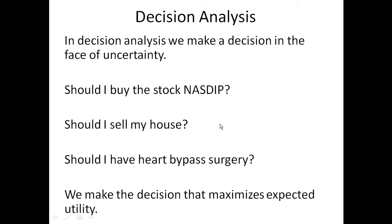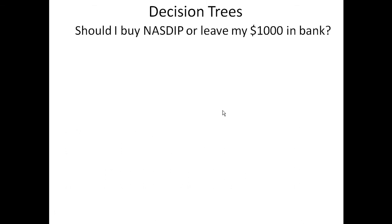The decision we make is the one that maximizes expected utility, and the utility has to be in terms of what the decision maker prefers. We use decision trees to model these kinds of decisions — this is not to be confused with the decision trees we talked about when I introduced knowledge-based systems. They are two separate structures that just happen to share the same name: decision trees.